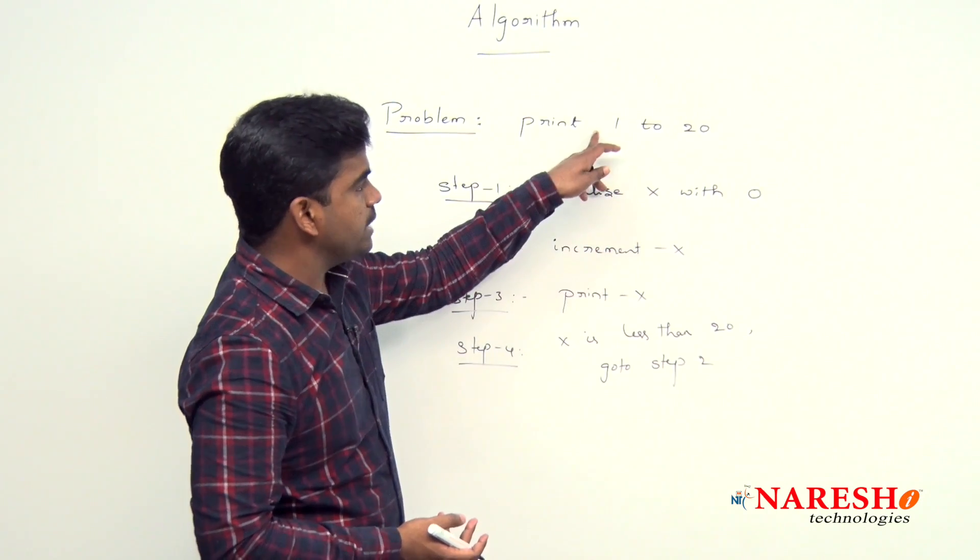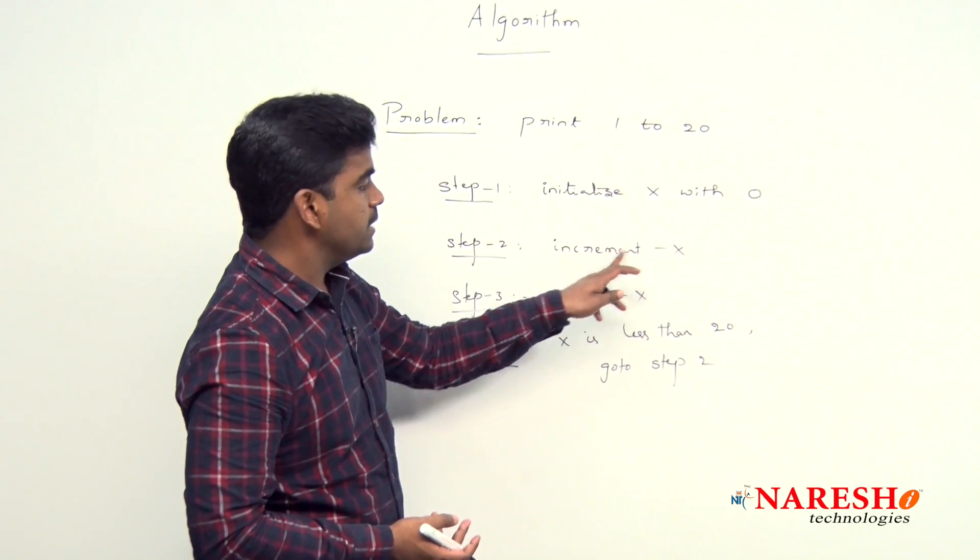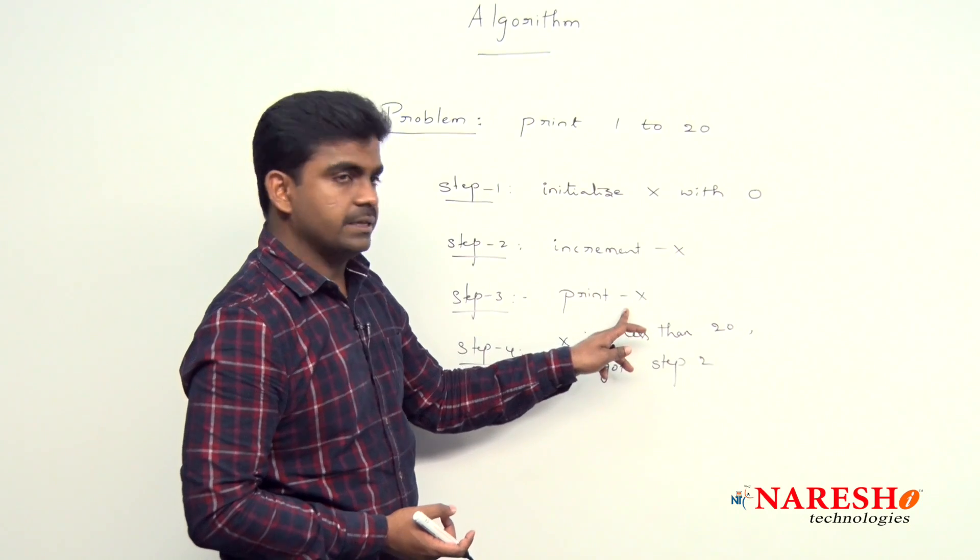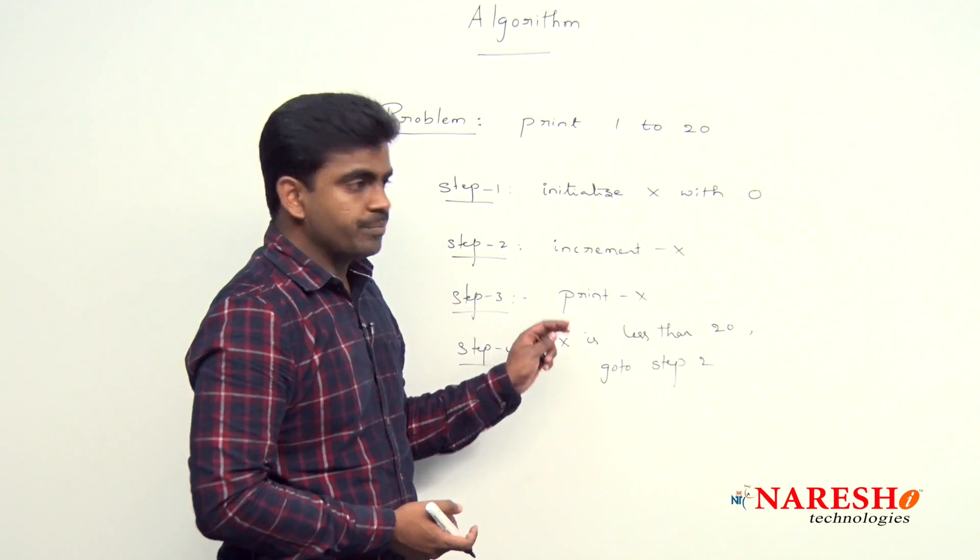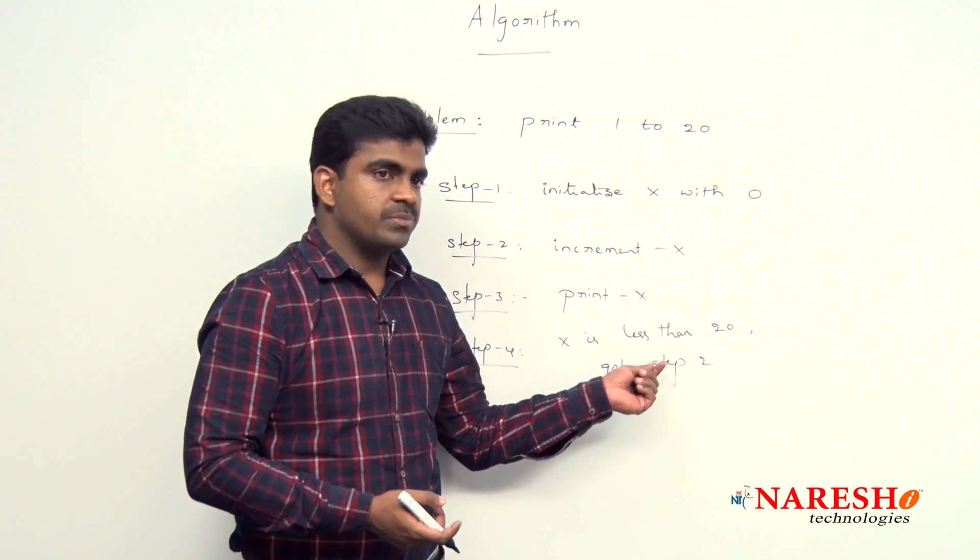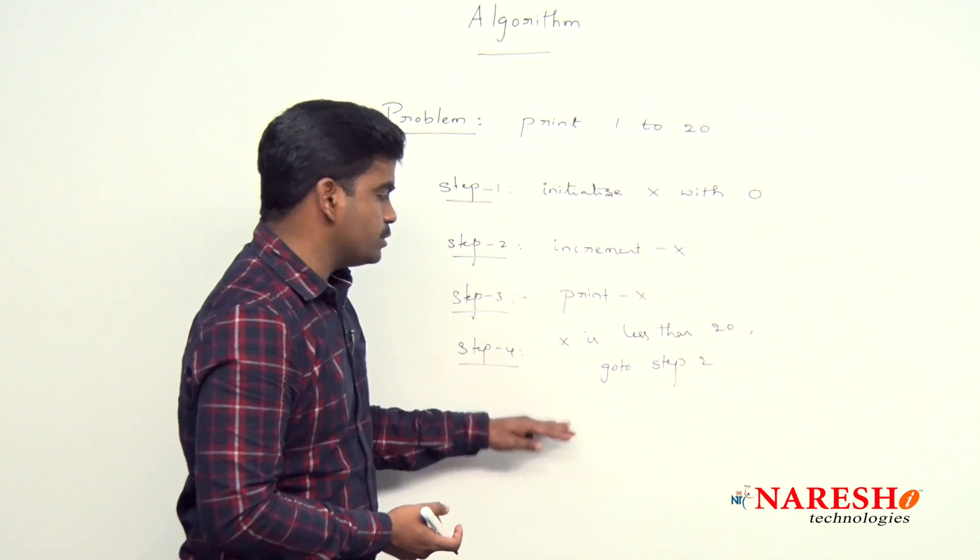So here once again we are not initializing. Directly increase the x value and print. Next again it will go, the value becomes 3, increase and print, again it will go. Here whenever it is 20, then it will stop automatically.